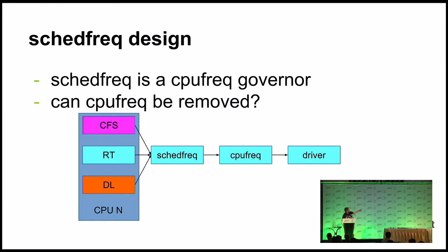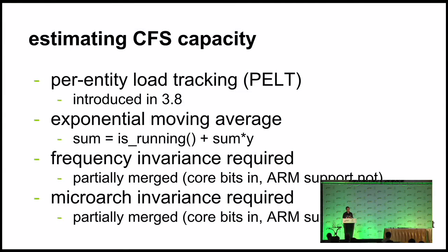Talking specifically about each scheduling class and how we estimate capacity: for CFS, everyone is probably familiar with the PELT — perennity load tracking — algorithm, introduced in the 3.8 kernel by someone from Google. It's an exponential moving average. For our solution, you need both frequency invariance and microarch invariance. Today with PELT out of the box, the capacity estimate for a task or run queue didn't take into account the fact that the CPU could be running at different frequencies — which is pretty important. Support to recognize that fact has since been added; most of it is upstream, with some ARM-specific work not yet upstream.